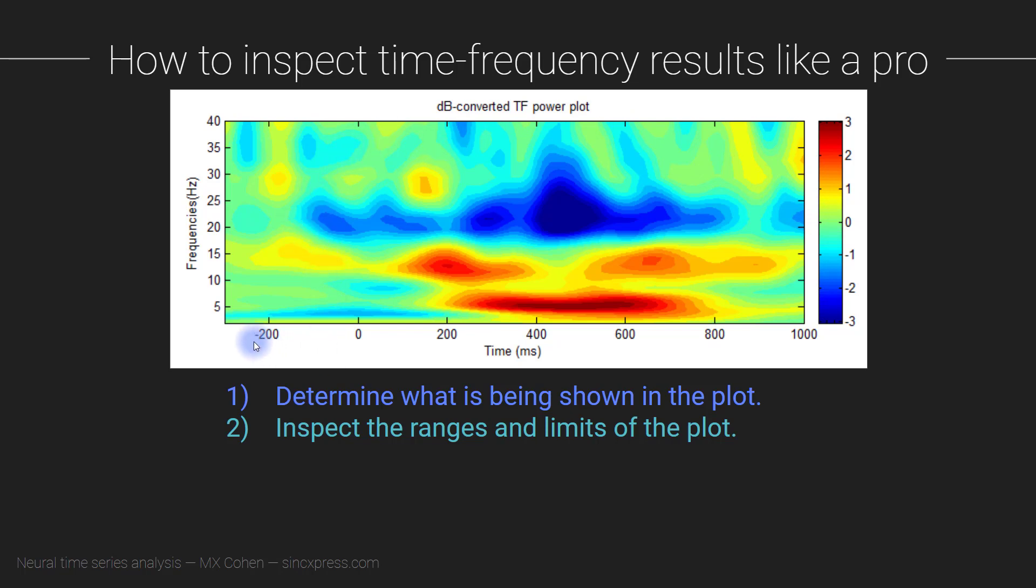And then we see the time axes go from looks like minus 300 milliseconds, here's time zero, up to one second. So in total, we have around a second and a quarter, or second and a third of time that's being shown in this plot.